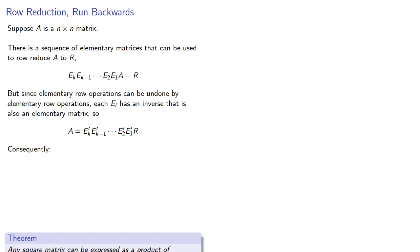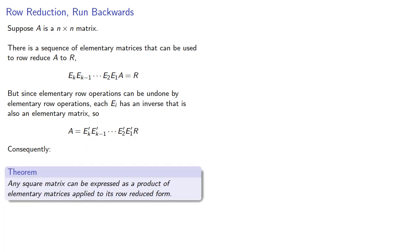Consequently, any square matrix can be expressed as a product of elementary matrices applied to its row-reduced form.